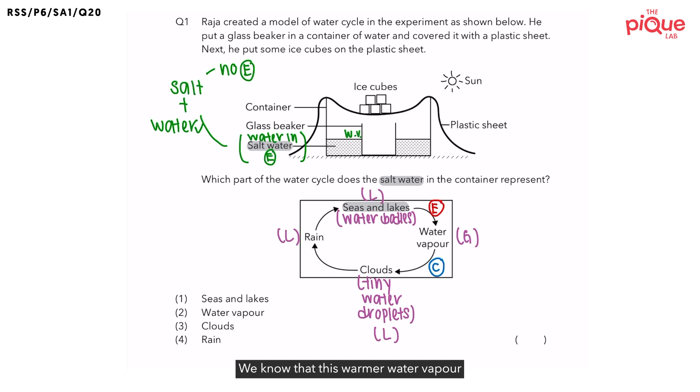So let's move on. We know that this warmer water vapor is going to rise up and come into contact with the cooler underside of this plastic sheet, lose heat to it, and condense to form tiny water droplets. So these tiny water droplets represent what in the water cycle? It actually represents the clouds.